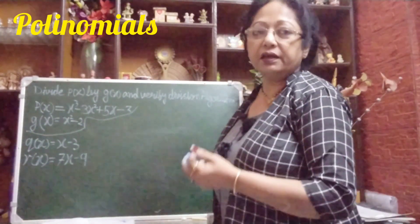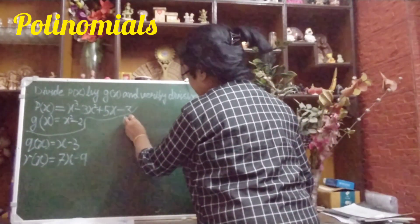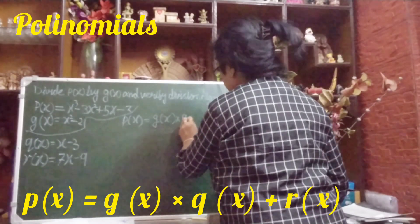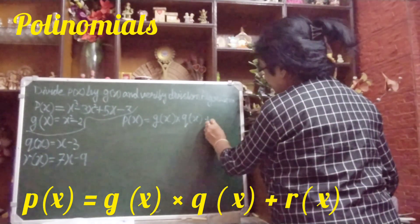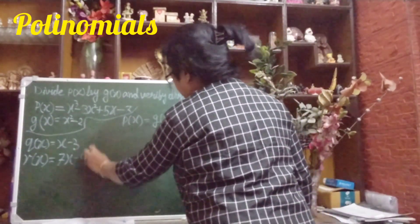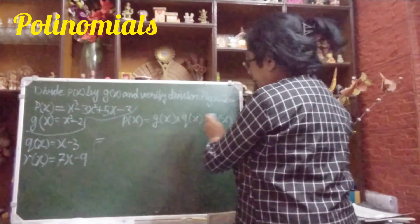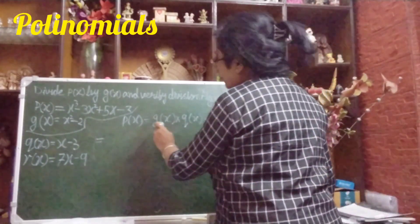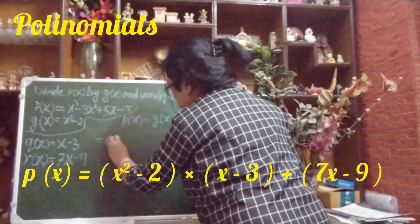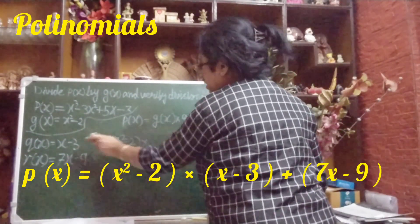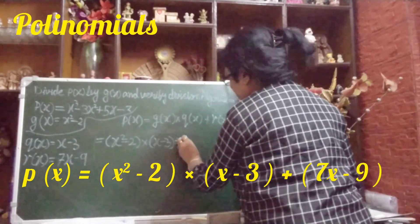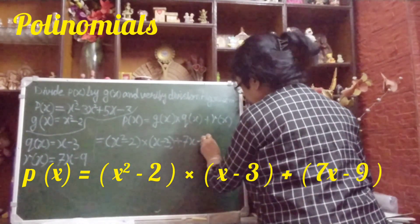Now we will verify by the division algorithm: p(x) = g(x) × q(x) + r(x). So we compute g(x) × q(x) + r(x), which is (x² − 2)(x − 3) + (7x − 9).